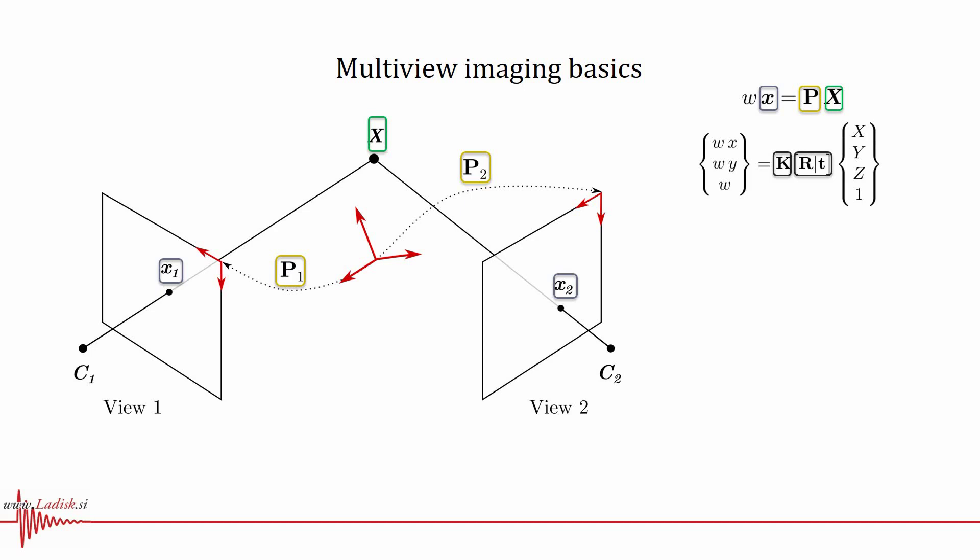As we can see, knowing the position of a physical point in one view gives us two independent equations along with an unknown projective scaling factor. Knowing the position of the same physical point in at least two calibrated image views, we can determine its 3D position by solving the resulting system of four equations linear in the three unknown coordinates. Knowing the position of the same physical point in additional views only adds equations to this already overdetermined system.